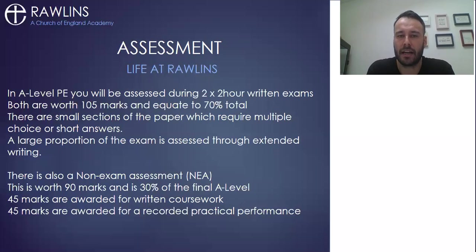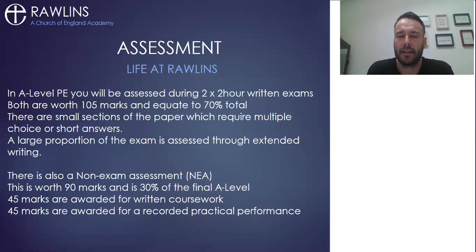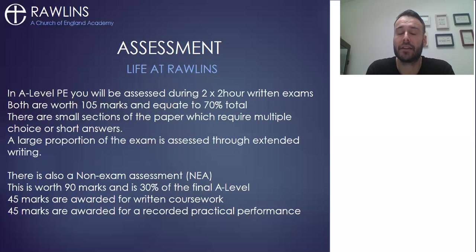The final part of the course is the NEA — the Non-Examined Assessment. It's worth 90 marks and is 30% of the A-level: 45 marks for the practical performance and 45 marks through the written coursework. It is very important that you are performing at a high level — it's very difficult to get a high mark in A-level PE by just being a recreational player, because a large number of students are competing at national or even international level in their chosen sports and the mark scheme is designed to reflect that. Even county players will not get full marks in A-level PE, whereas they would have in GCSE PE.